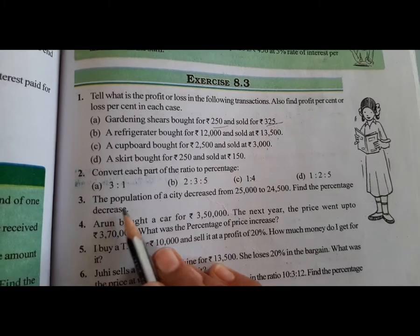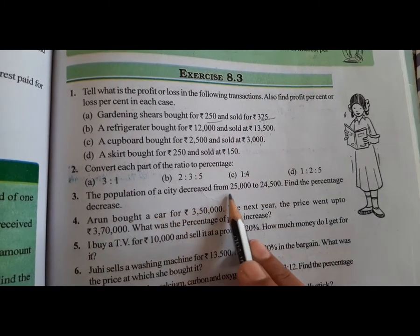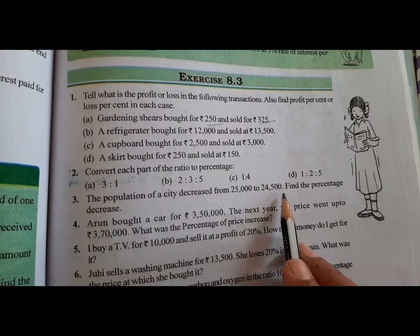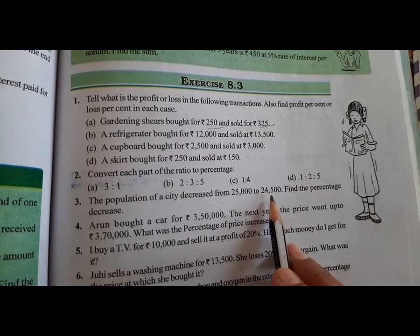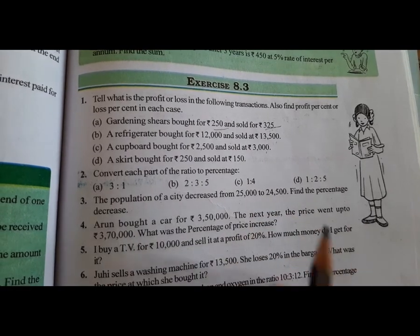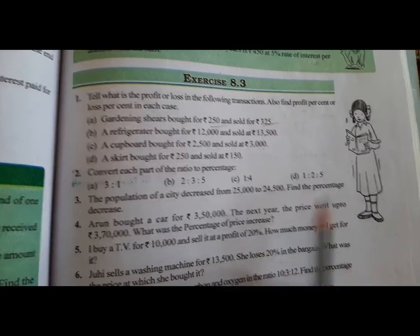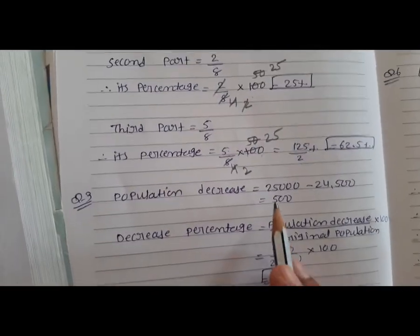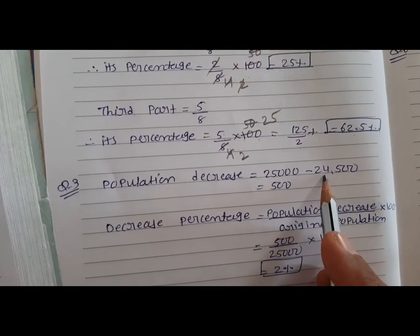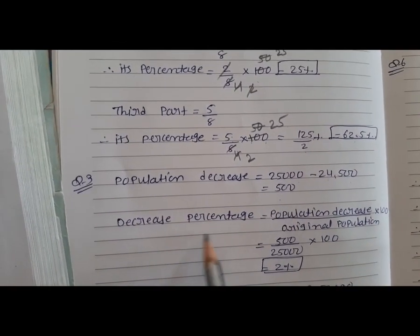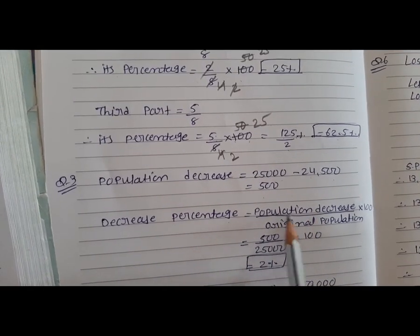Question 3: The population of a city decreased from 25,000 to 24,500. Population decrease = 25,000 minus 24,500 = 500. Find the percentage decrease: decrease upon original population multiply 100 = 500 upon 25,000 multiply 100 = 2%.